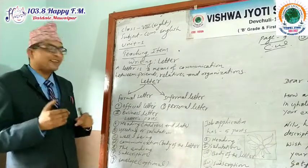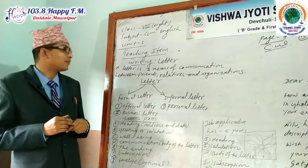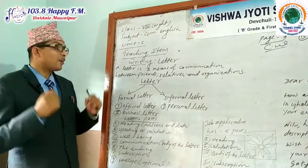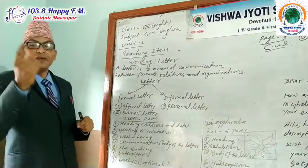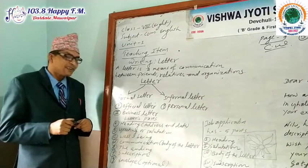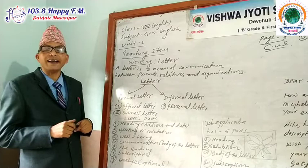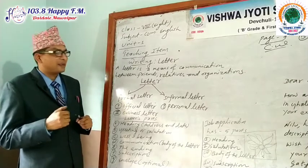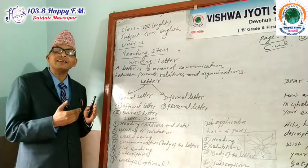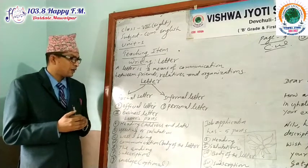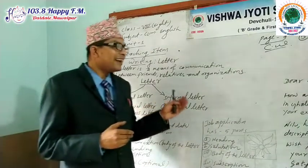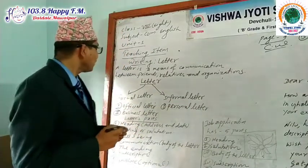A letter has two types of form. The first is a formal letter — that is, an official letter and a business letter. A formal letter is one that is sent and received officially.